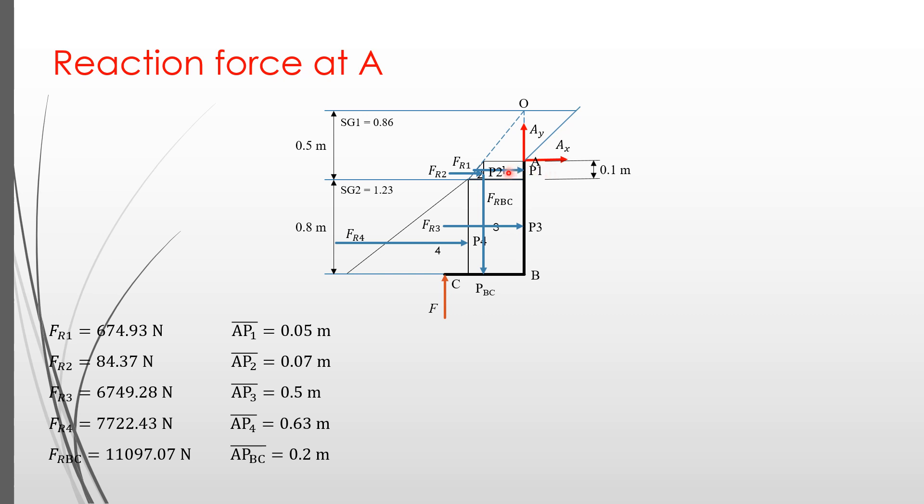Horizontal forces FR1, FR2, FR3 and FR4, all directed to the right with perpendicular distances from A given by AP1, AP2, AP3, and AP4 respectively. We have two vertical forces, one is FRBC applied at PBC at a horizontal distance from A represented by APBC, and the force F located at C at a horizontal distance from A represented by BC. This force F is the one that we need to calculate to hold the gate in its location, in other words, to maintain its static equilibrium.